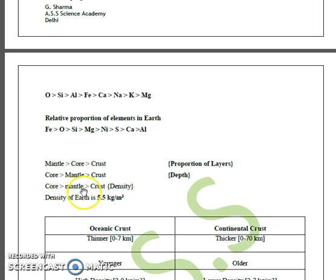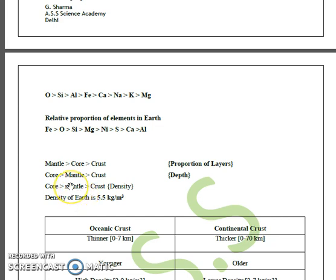Regarding the density of these layers — crust, mantle, and core — since heavier elements are at the bottom and lighter elements at the top, the core is the densest. Within the core, the inner core is denser than the outer core. This is followed by the mantle, where the inner mantle is denser than the outer mantle, and then the crust.